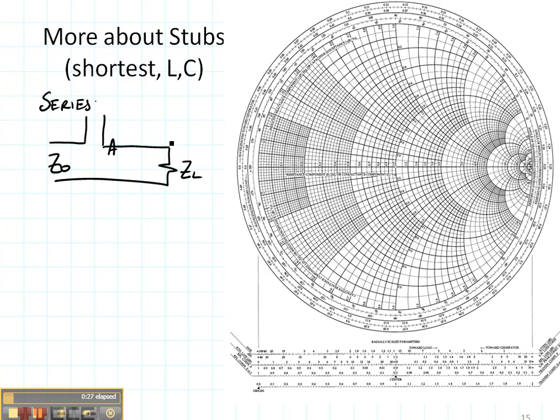This A point right here is found by rotating a distance D until we get to the matching circle, and the length of the stub is found by removing the imaginary part that we have at ZA.